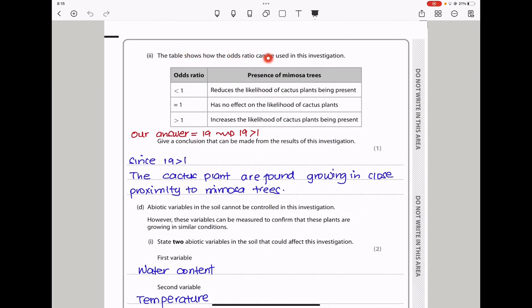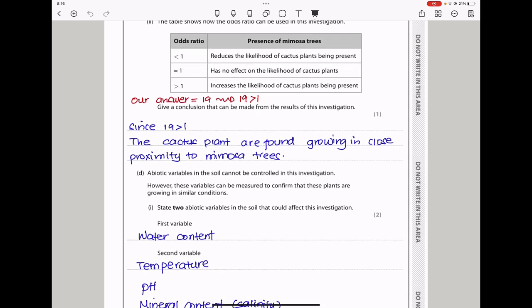The table shows how the odds ratio can be used in this investigation. Here we can see it can be less than 1, equal to 1, or greater than 1, depending on the preference of mimosa trees. They ask to give a conclusion that can be made from the results. From the investigation, we get 19, and since 19 is greater than 1, we can say this is going to increase the likelihood of cactus plants being present. Therefore, my conclusion is the cactus plants are found growing in close proximity with the mimosa trees.